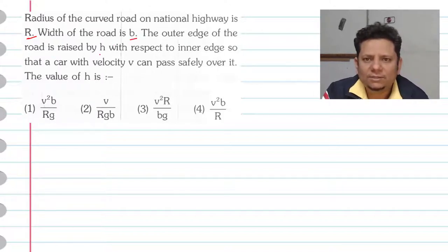Width of the road is B. The outer edge of the road is raised by H with respect to the inner edge so that the car with velocity V can pass safely over it. The question is, value of H?